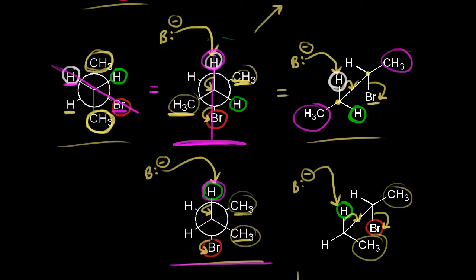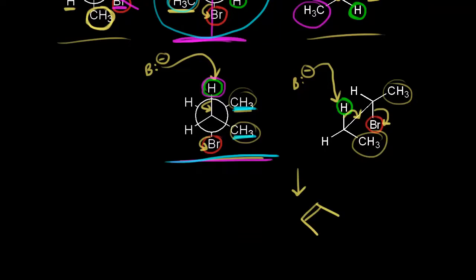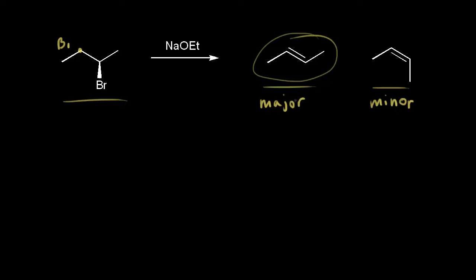The first conformation is more stable because the bulky methyl groups are anti to each other. In the second conformation, the two bulky methyl groups are gauche to each other, causing increased steric hindrance — this is the less stable conformation, and therefore the cis product is not as stable as the trans product. To summarize: beta one carbon had two protons, giving two different products. The trans product is the major product, coming from the more stable conformation. The cis product is the minor product, from the less stable conformation. This reaction is stereoselective — one stereoisomer is favored over the other; trans is favored over cis.